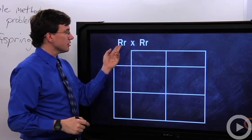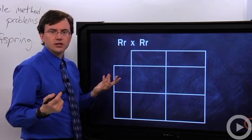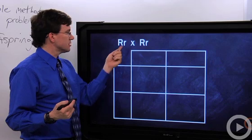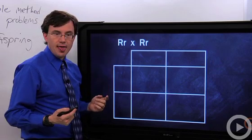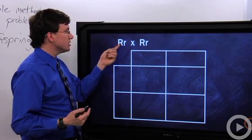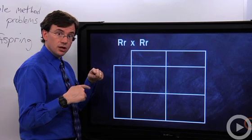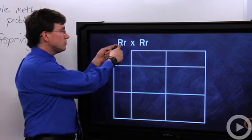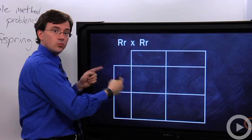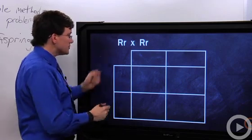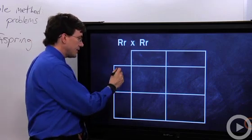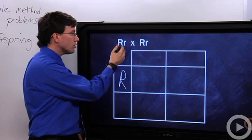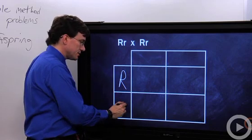So somebody who's big R, little r, and we're going to do this for the tongue-rolling allele versus the recessive non-rolling allele. So this parent, what I do is I know by the first law of Mendel, the law of segregation, that these two R's have to separate and wind up in different gametes. So this person can create a gamete that has a big R, or they can produce a gamete that has a little r.